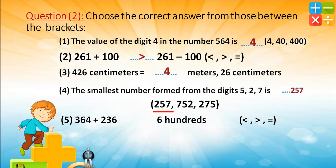364 plus 236 — less than, greater than, or equal to 600? When we add, starting with units: 4 plus 6 equals 10, zero carry 1; 1 plus 6 plus 3 equals 10, zero carry 1; 1 plus 2 plus 3 equals 6. So 364 plus 236 equals 600. Equal!